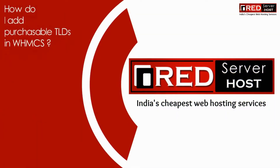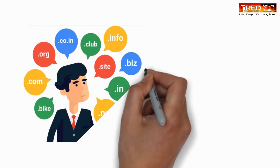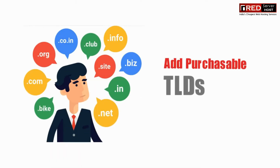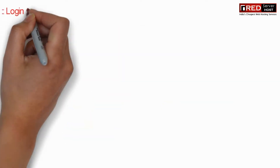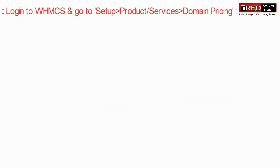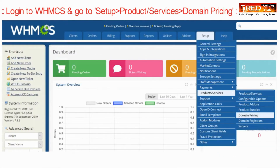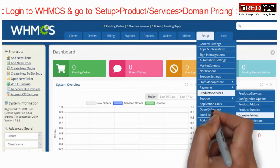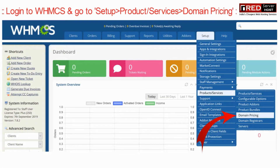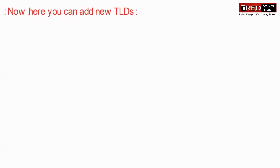Today in this video we will learn about how to add purchasable TLDs in WHMCS. For that, login to WHMCS and then go to Setup, Product Services, and then go to the Domain Pricing section.